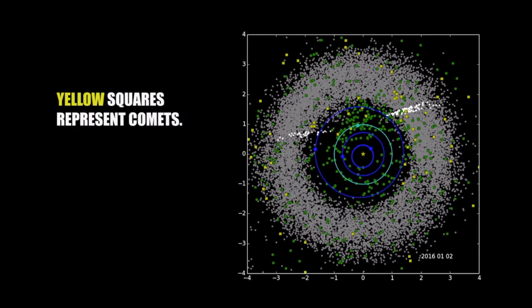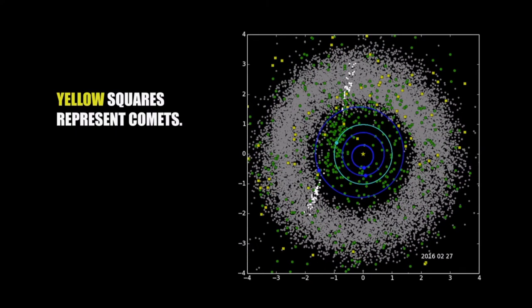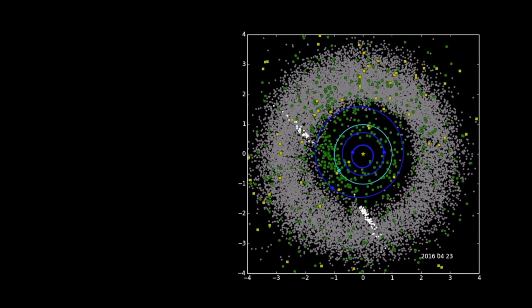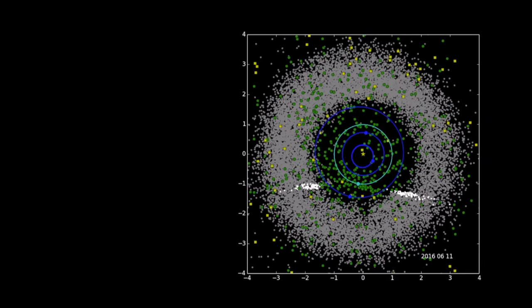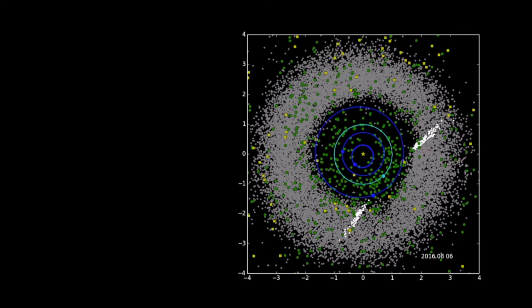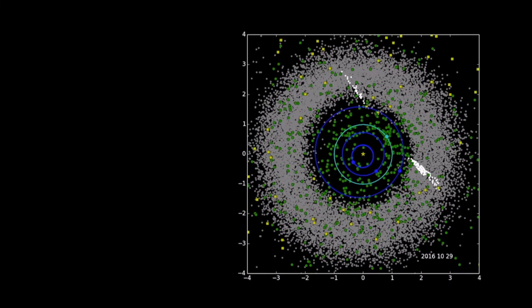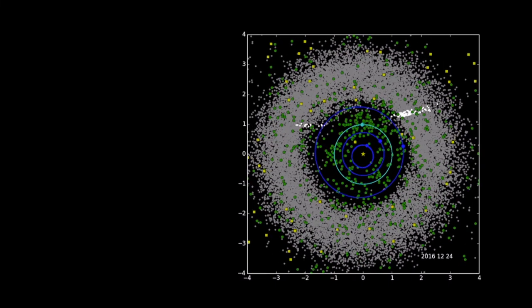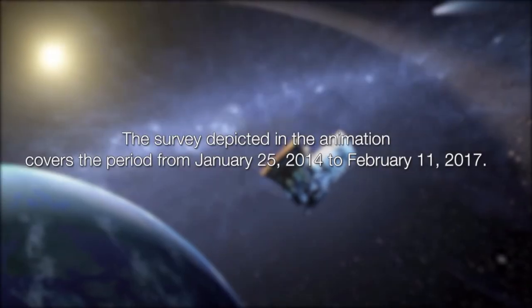It is the 52nd asteroid to skim past the Earth by a distance less than that of the Moon this year. Lindley Johnson, Planetary Defense Officer at NASA's Science Mission Directorate in Washington DC, told Newsweek that there are thousands of similar objects in space.